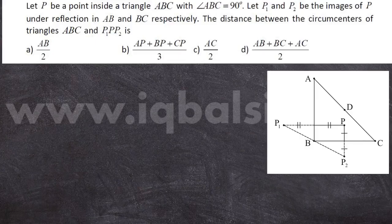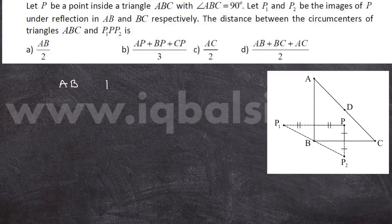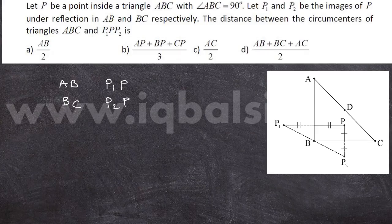I have drawn a figure here. In the figure, P1 is the reflection of P in the line AB and P2 is the reflection of point P in the line BC. So it is very easy to see that AB is the perpendicular bisector of the line segment P1P. Similarly, BC is the perpendicular bisector of the line segment P2P. We can also note that since angle ABC is 90 degrees, angle P1PP2 will also be a right angle.